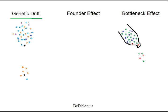Genetic drift is the concept that there's a chance variation in a small population that can really affect the allele frequency. I've drawn a bunch of different alleles here — each color stands for a different allele. This is supposed to represent a large population, whereas this is supposed to represent a smaller population. Say suddenly this large population shrinks down. The remaining population has the majority as oranges, there's one black and one blue, which is very different from the starting population.